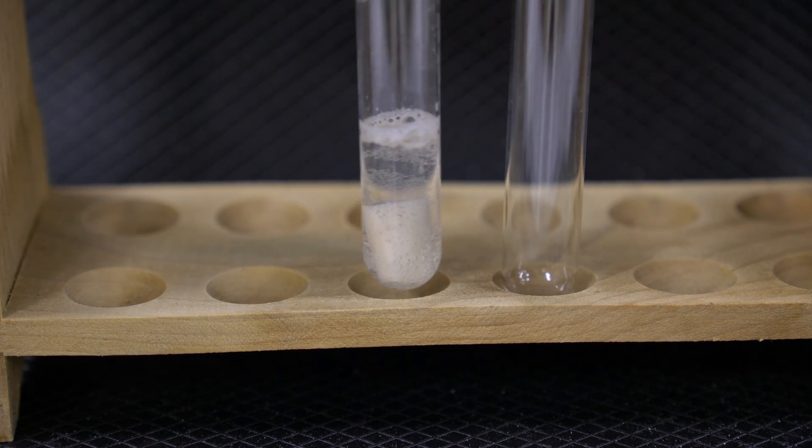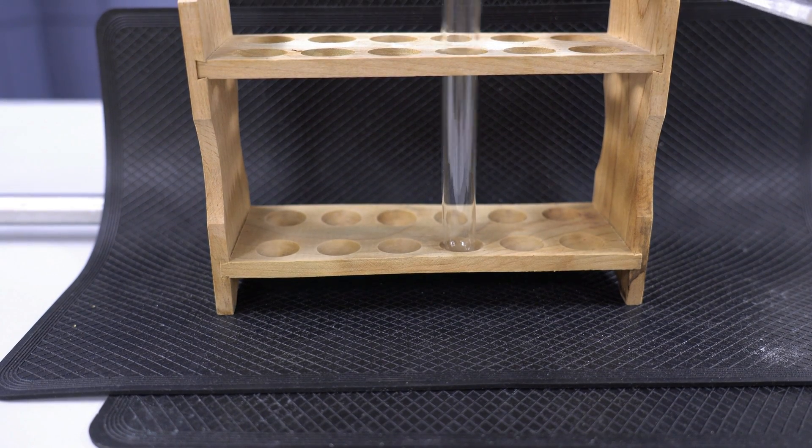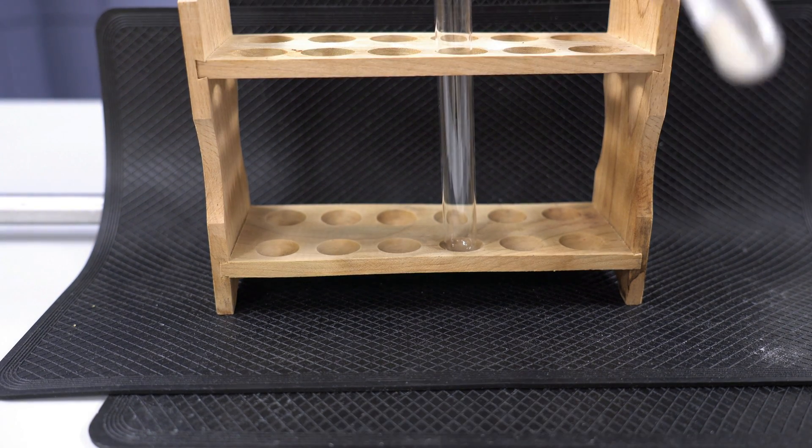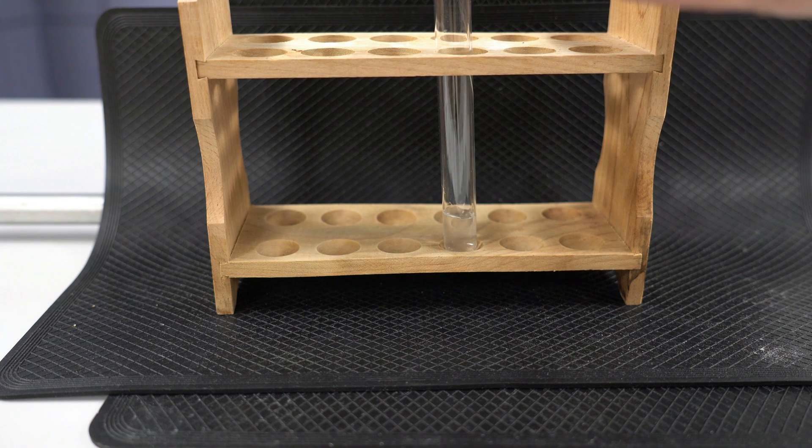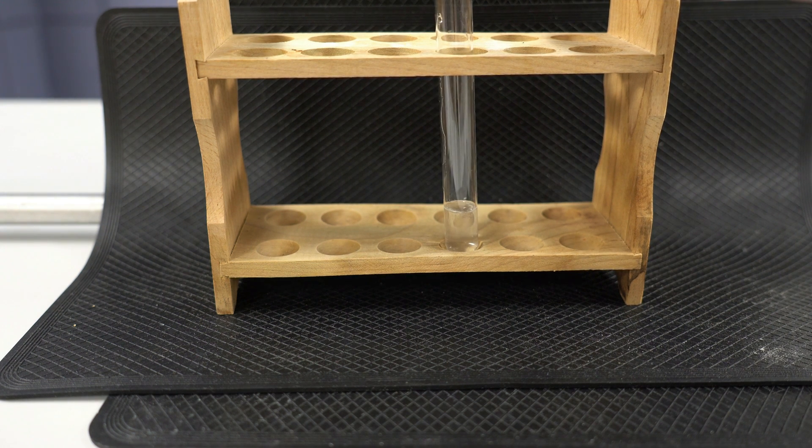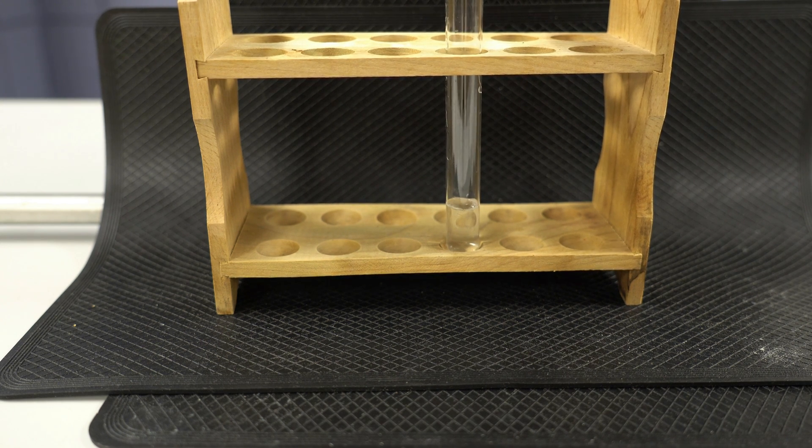What I'm going to do is take the liquid from here and simply pour it into our second test tube, trying to make sure we don't also include the potato. Pouring off that liquid, decanting that liquid there.